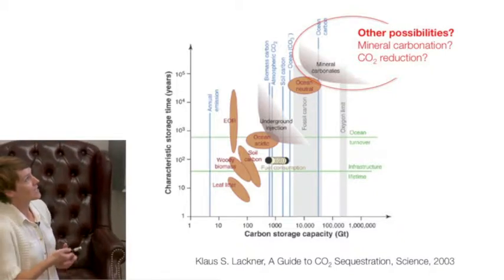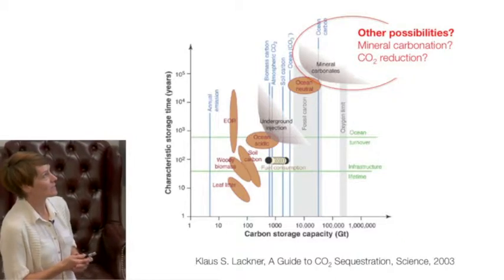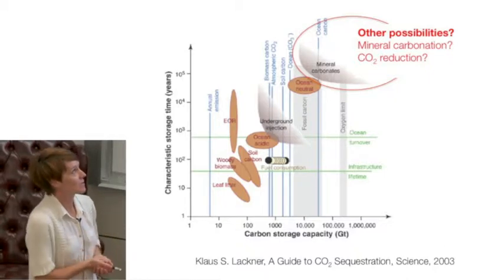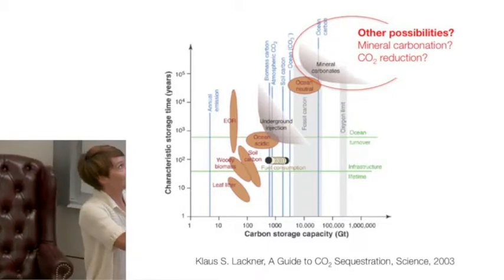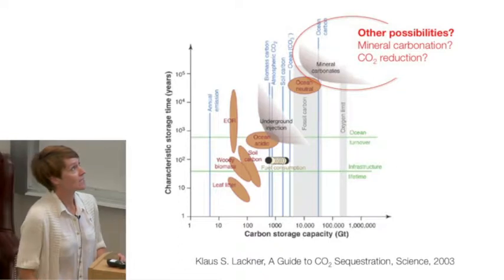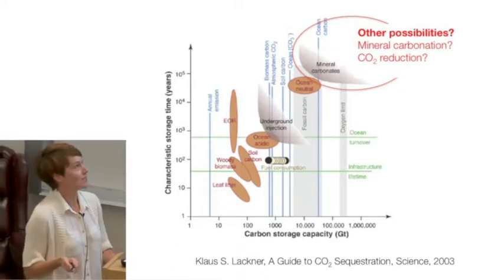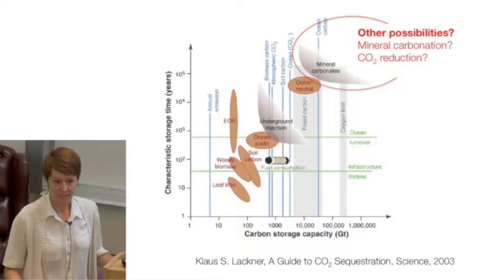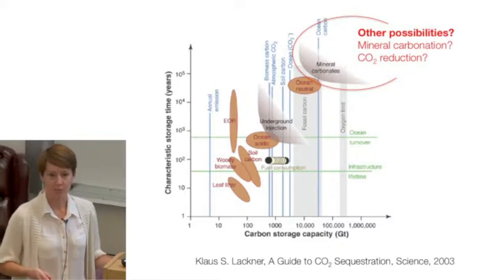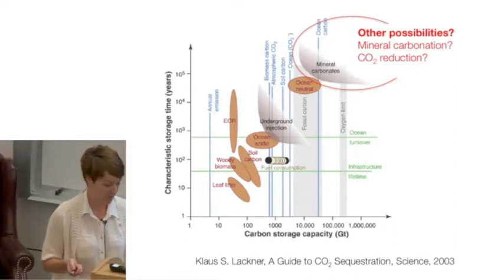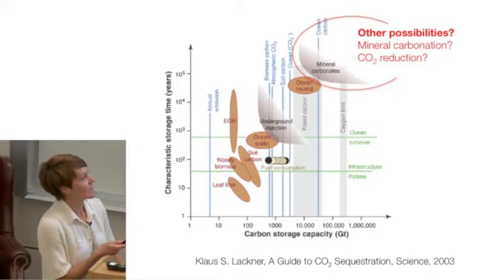On the geologic storage side, one alternative is called mineral carbonation. This approach has both a large carbon storage capacity and a long characteristic storage time — we're basically going to turn the CO2 into rocks. Another technology that could be 50 to 100 years out is exploiting the fact that oil and gas reservoirs are highly reducing conditions, making it thermodynamically favorable for CO2 to be reduced to another form. Maybe long-term in the future, we could inject CO2 down and engineer reactions that would turn it into something more useful.